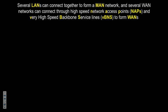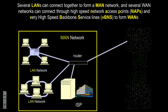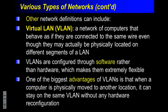Local area networks connect together to form the metropolitan area network. Metropolitan area networks connect together to create the wide area network. All the wide area networks connect together to form the internet. There are also high-speed backbone service lines that connect one wide area network to another through a very fast connection.